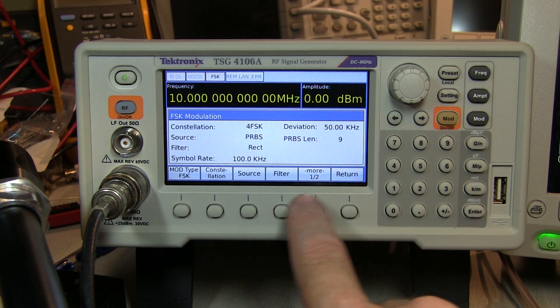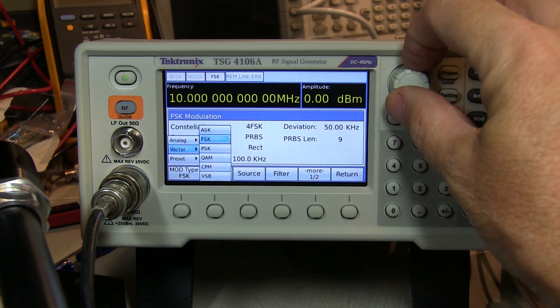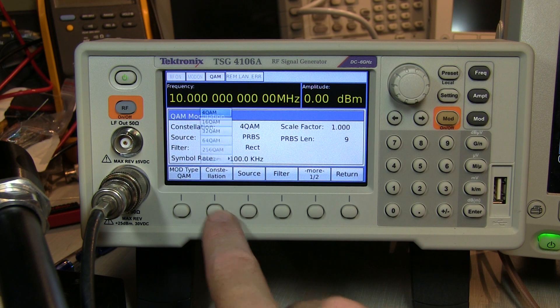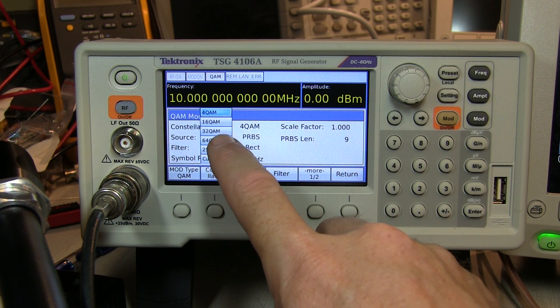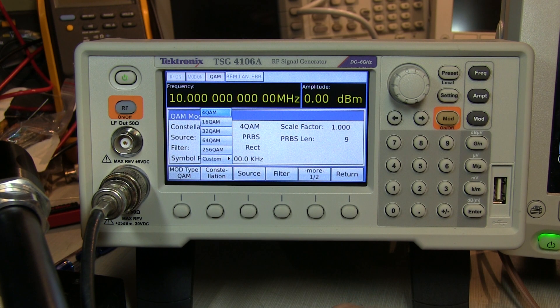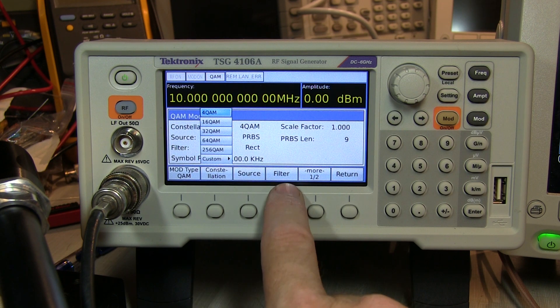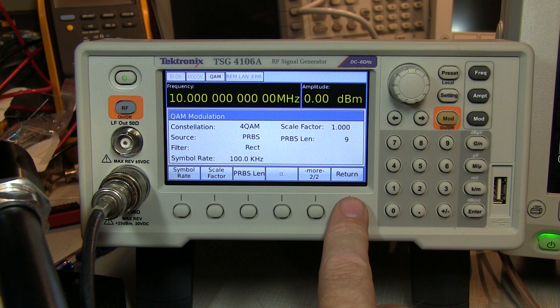Those menu items are basically pretty much the same for most of the vector modulation types. We pick, say, a QAM modulation, then we have a choice of QPSK or 4 QAM, 16, 32, 64, 256 QAM, or a custom, and then the same choices for the baseband data source, the filter, symbol rate, and symbols, and things like that.